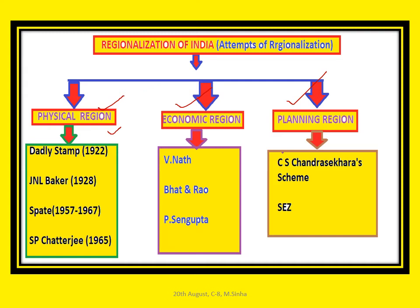J.N.L. Baker in 1928 proposed a very similar classification to L.D. Stamp. Next is the division of India by SPATE in 1967 — the final version. He divided India into three macro regions: the mountain rim, the Indo-Gangetic plain, and Peninsular India. He also divided India into 34 first-order regions, 74 second-order regions, and 225 sub-regions in the third order.